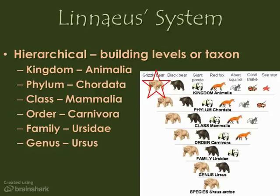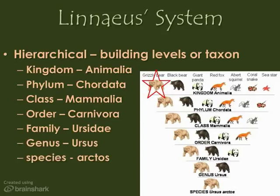The genus Ursus includes black, brown, and polar bears exclusively. Sloth bears, spectacled bears, sun bears, and giant pandas all have different characteristics than the other three, so they each have their own genus. For example, sloth bears have a shaggy coat and longer noses. Sun bears have naked soles on their feet, while other bears have hairy bottoms on their feet. Pandas are largely herbivorous with a thumb-like modification in their forepaws. So we see how different animals get separated out in their genus.